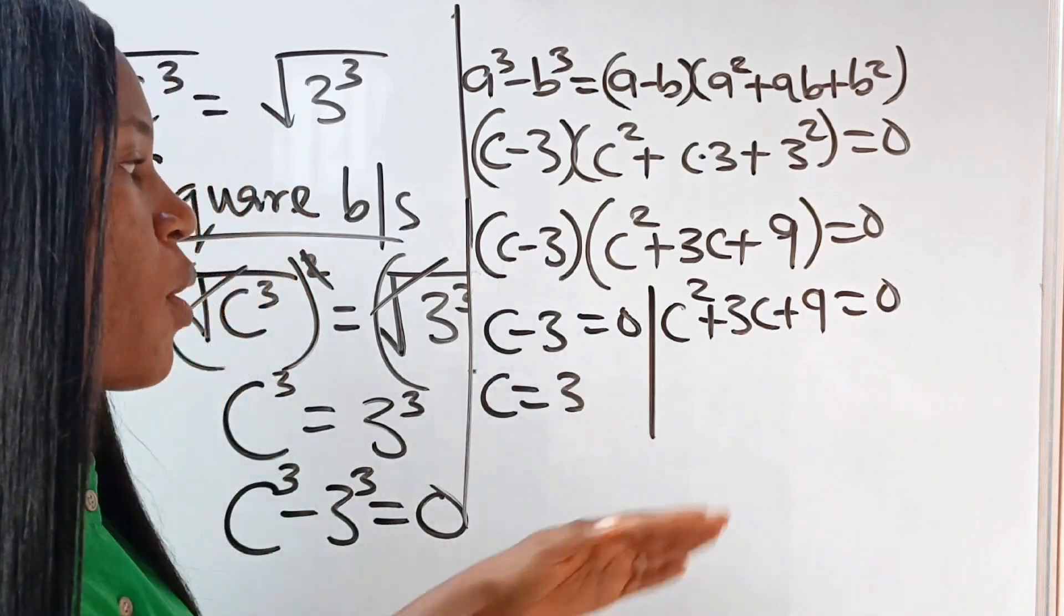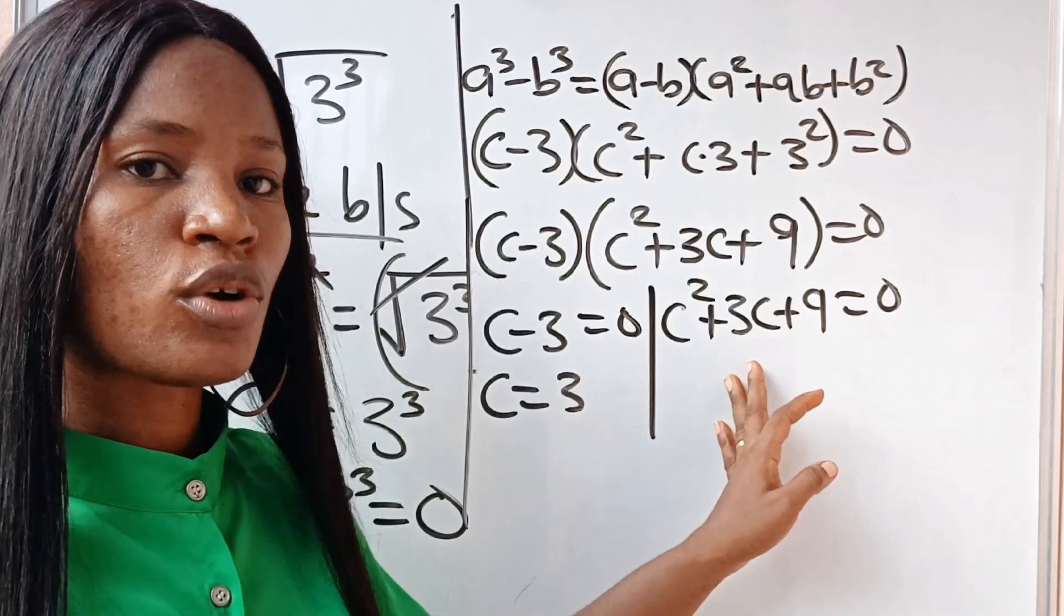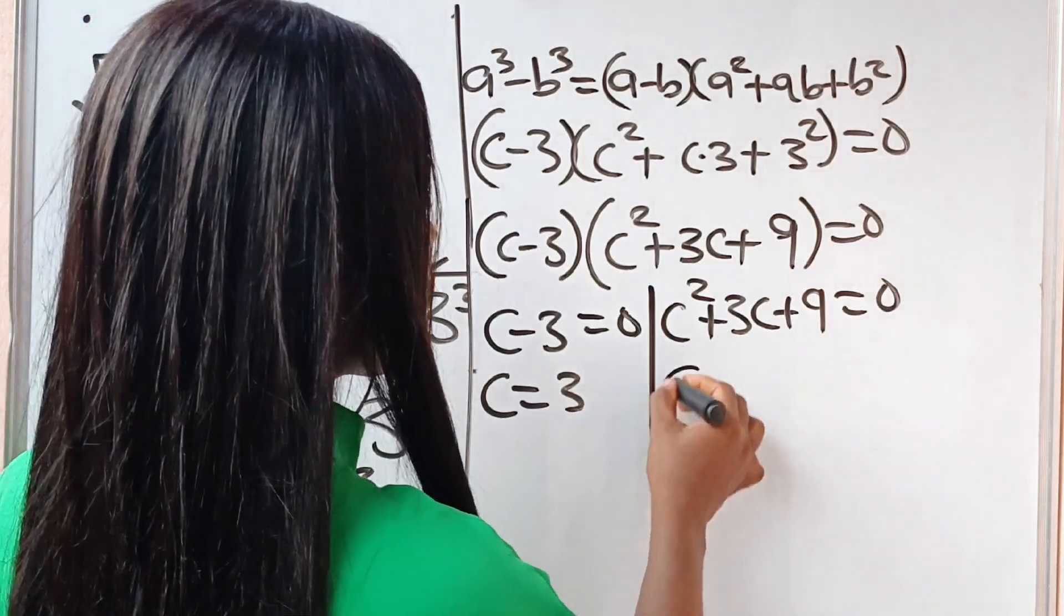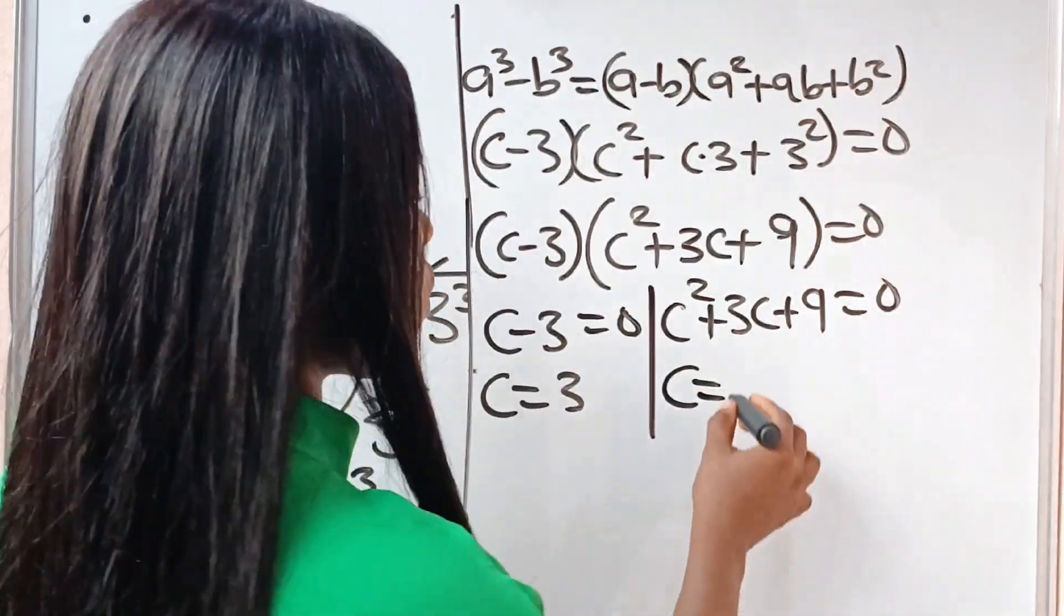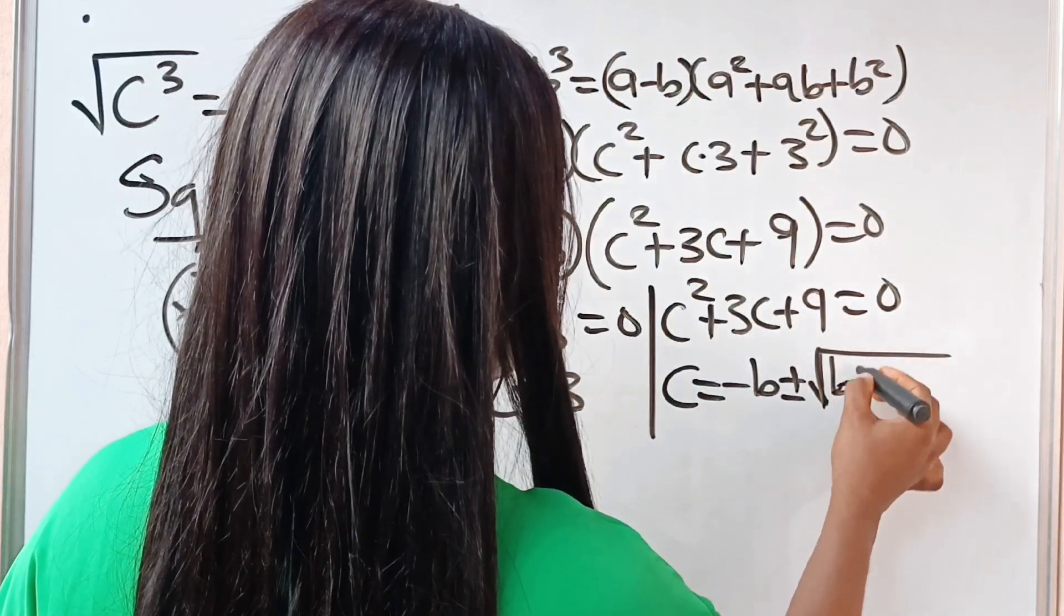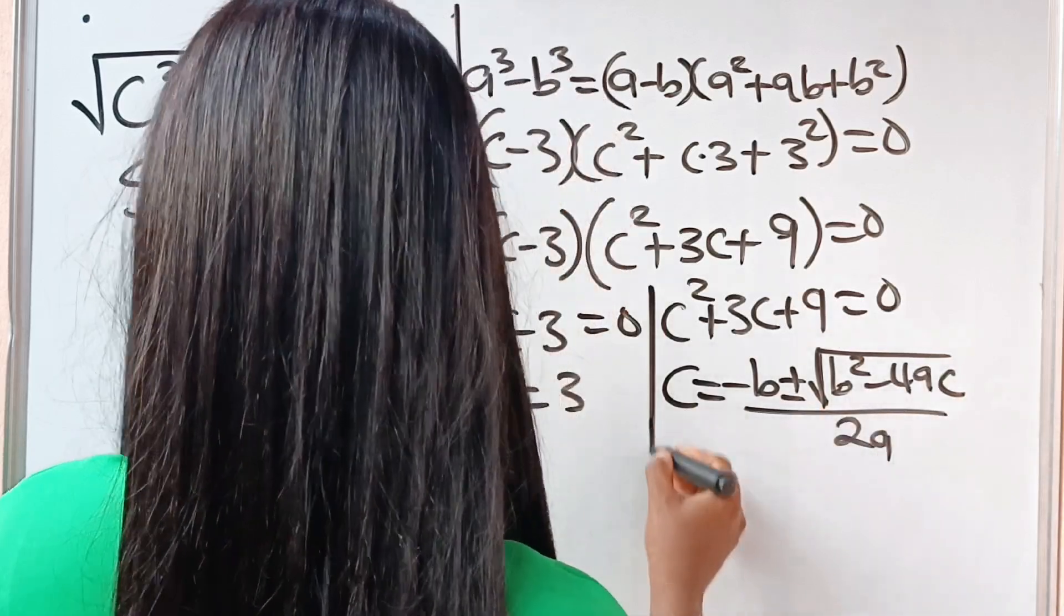For the right-hand side, we have a quadratic equation that can only be solved using the quadratic equation formula. Yes, the quadratic equation formula states that since we are looking for the value of c, that c is equal to minus b plus or minus square root of b squared minus 4ac, everything divided by 2a.